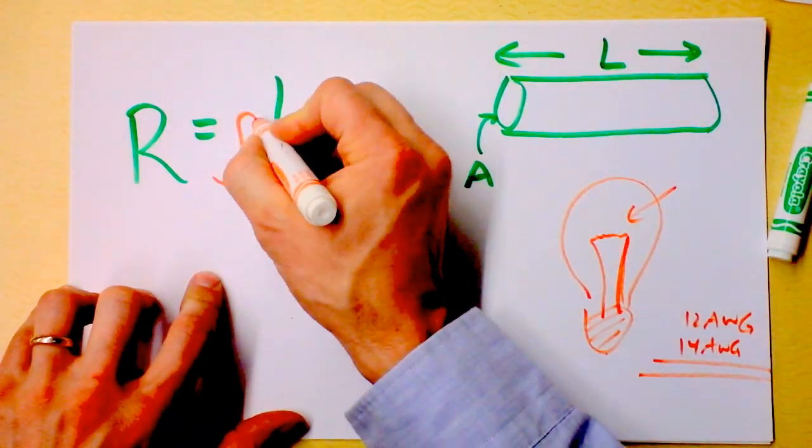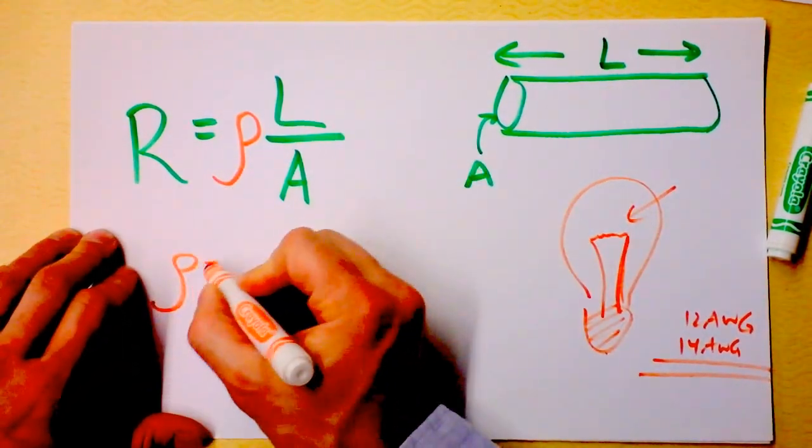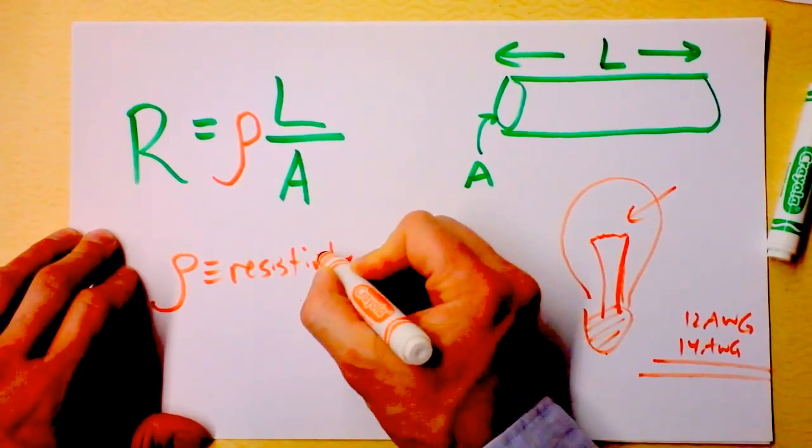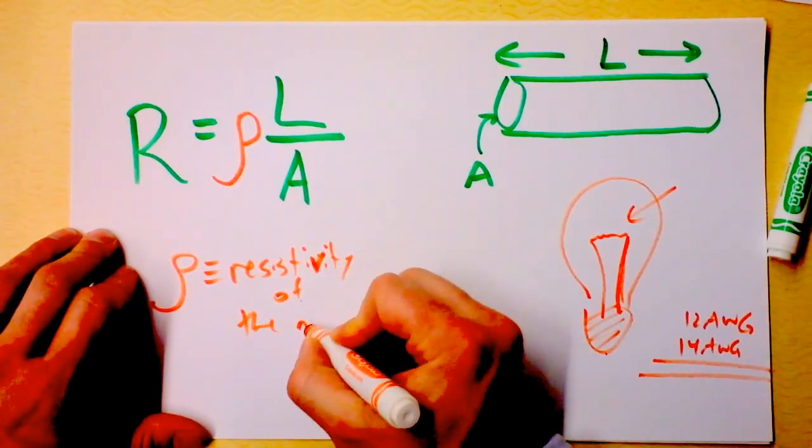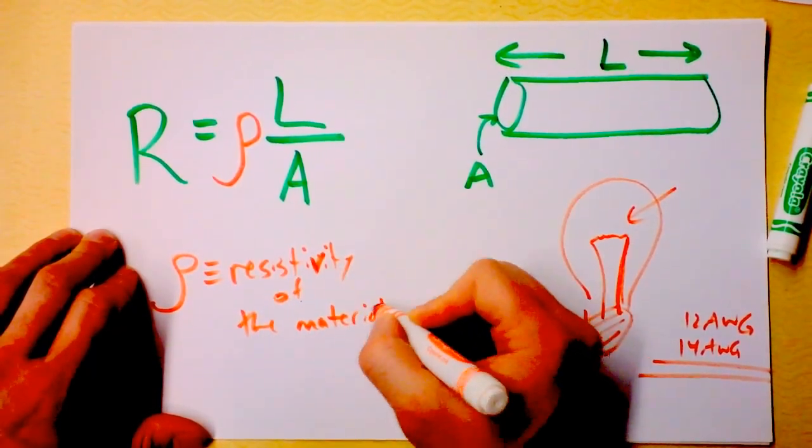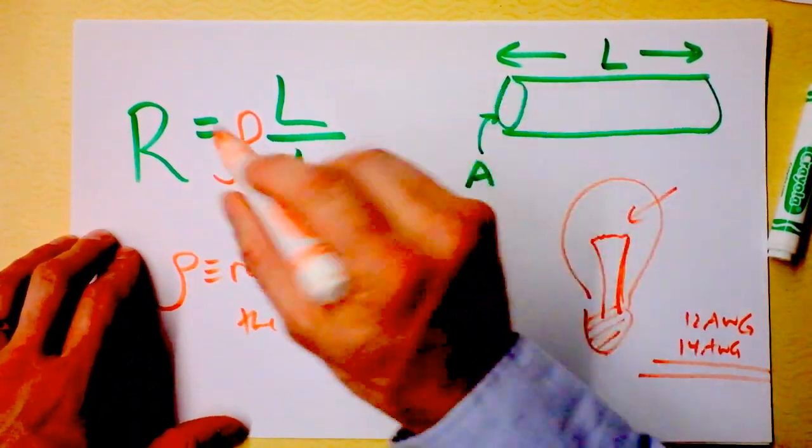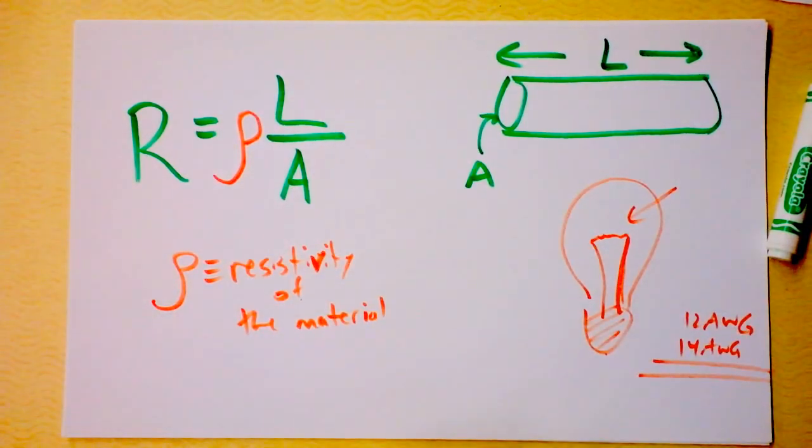ρ is the resistivity of the material. That seeks to take out all the effects of how long the resistor is and how wide the resistor is, and it is a property of a certain metal.